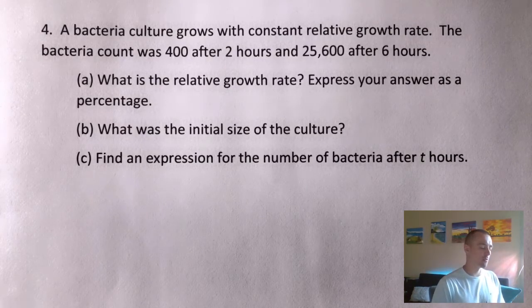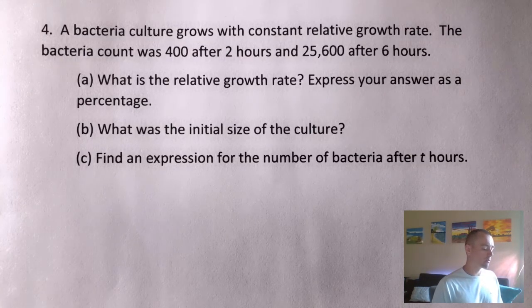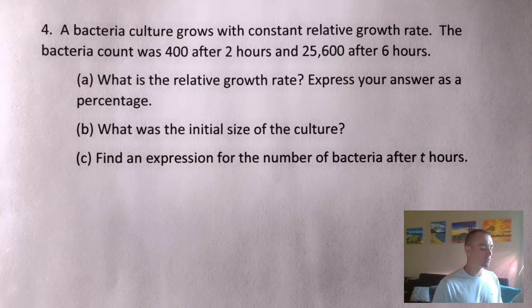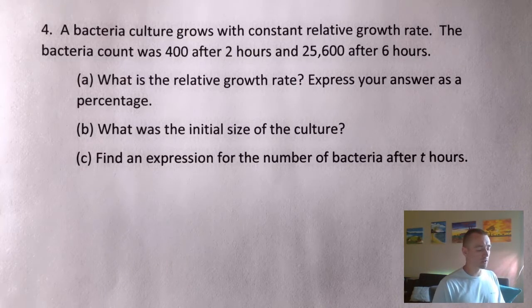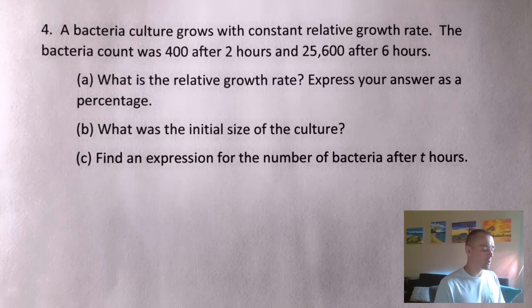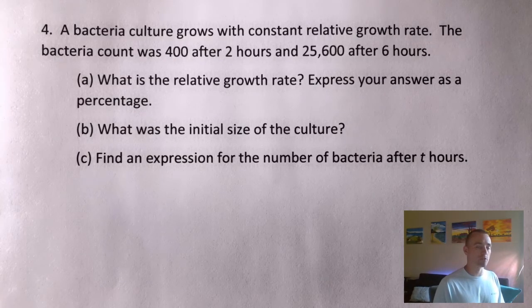I wanted to show you how to do this example right here. A bacteria culture grows with a constant relative growth rate. The bacteria count was 400 after two hours and 25,600 after six hours. This is actually going to be a three-part question. Part A is: what is the relative growth rate? Express your answer as a percentage. Part B: what is the initial size of the culture? And part C: find an expression for the number of bacteria after T hours.